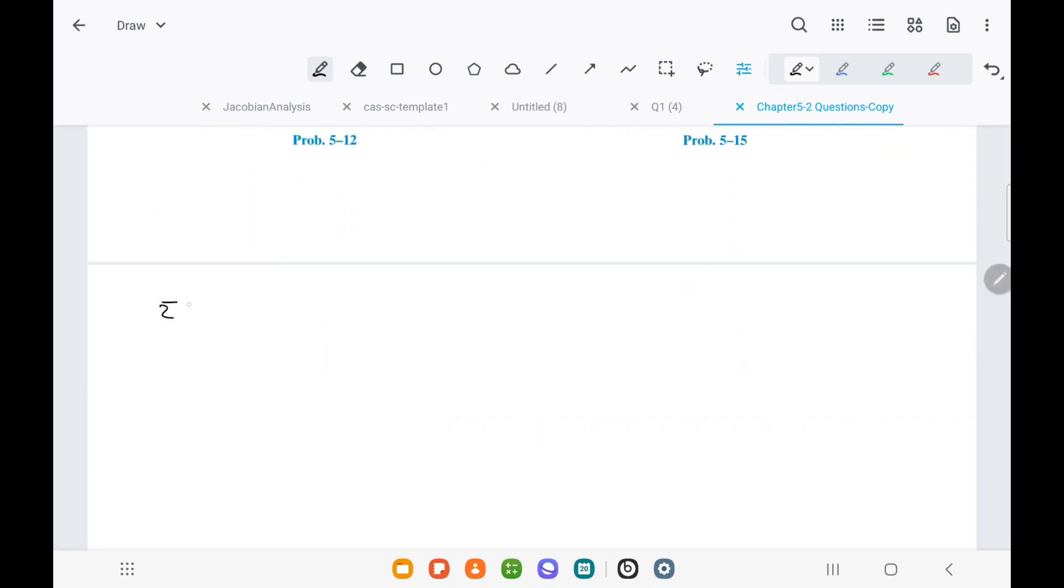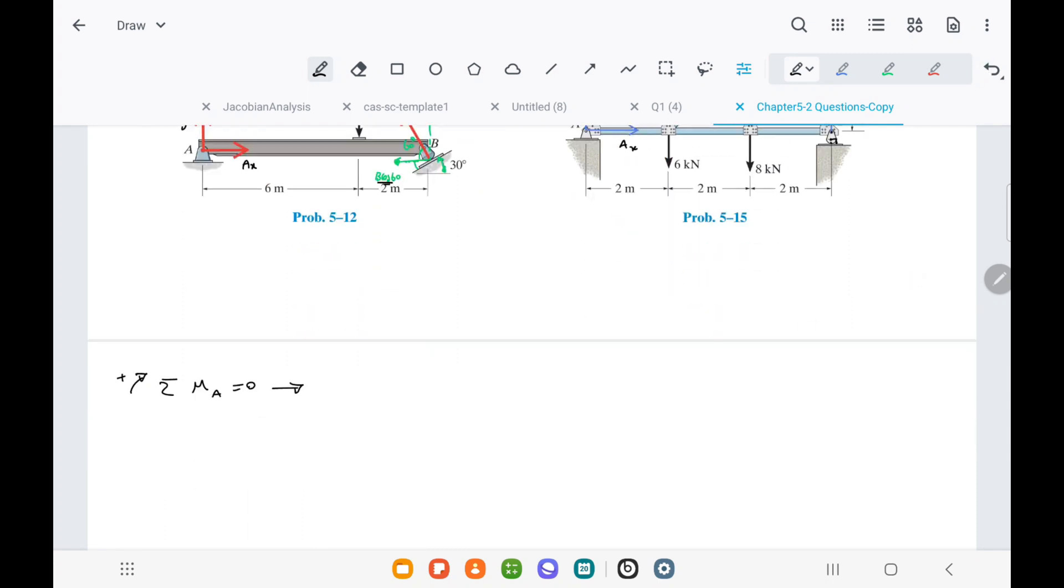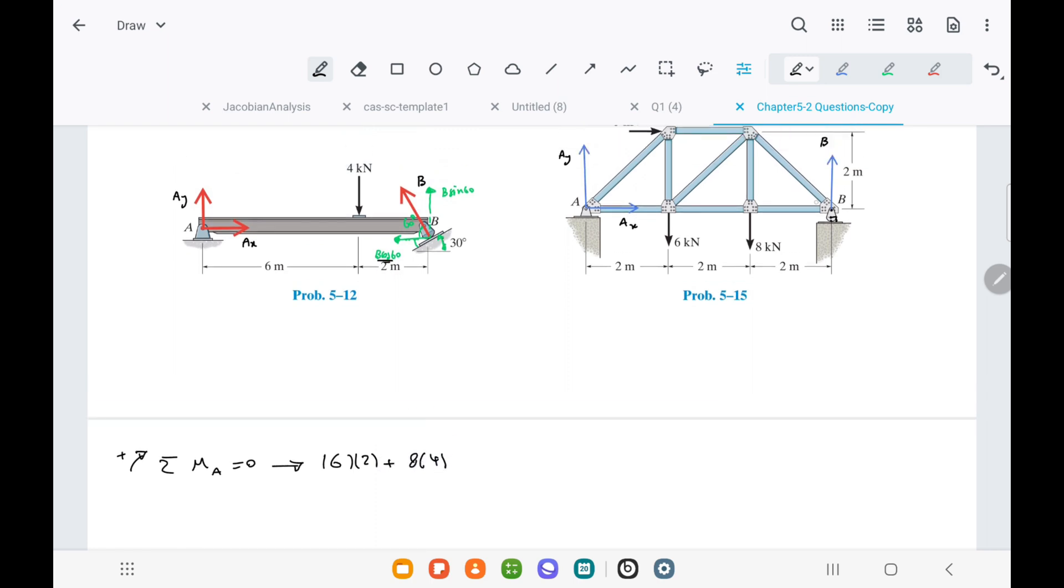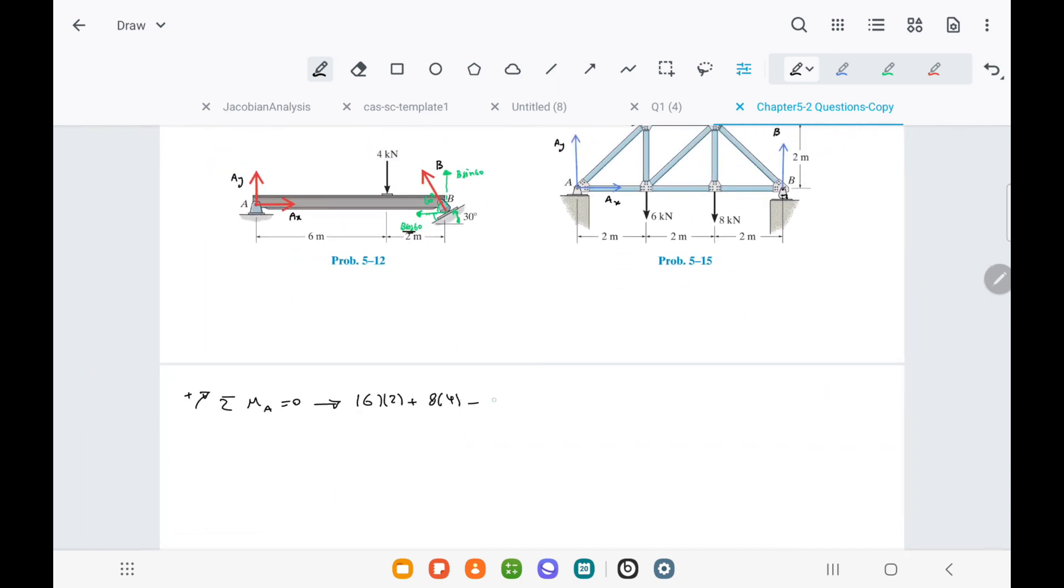Using the equation of sigma MA, the sum of moments at point A in the clockwise direction equals zero, we can calculate the force B by considering the clockwise moments caused by the 6 kilonewton, 8 kilonewton, and 5 kilonewton forces. The moment caused by the force at joint B is negative and also contributes to the equation.